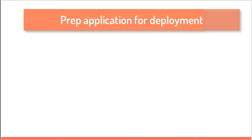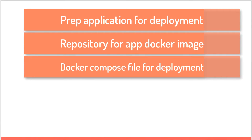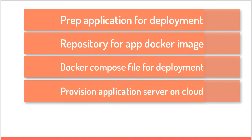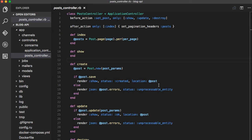Here is what we're going to go through in this video: start with preparing the application for cloud deployment, create a repository for the application's Docker image and push the image there, define a compose file for the new environment, provision a VM or droplet on DigitalOcean cloud using Docker Machine, and finally deploy the application and test.